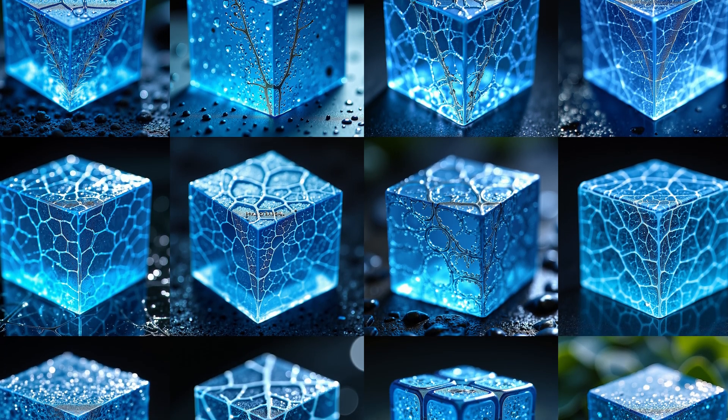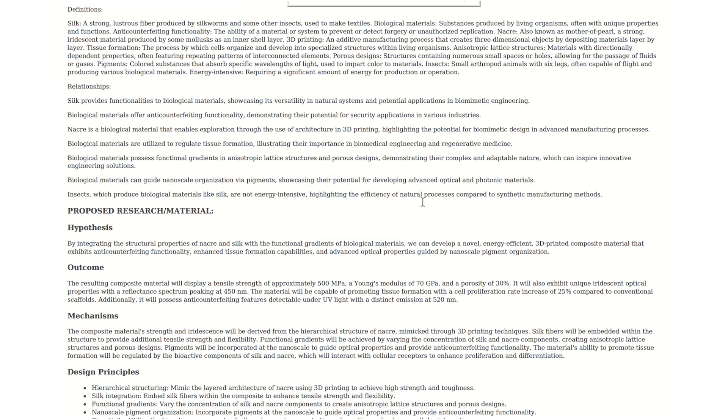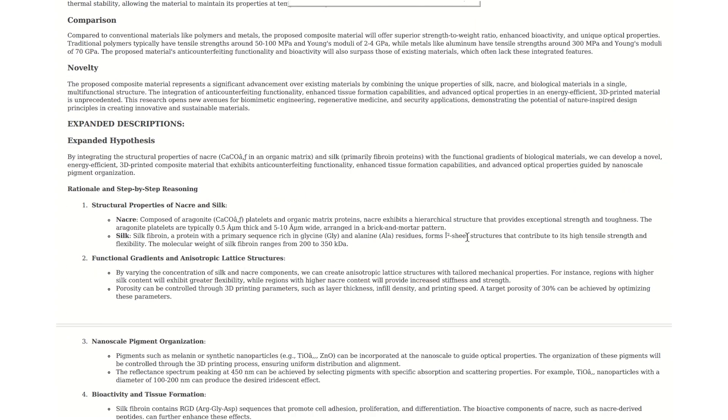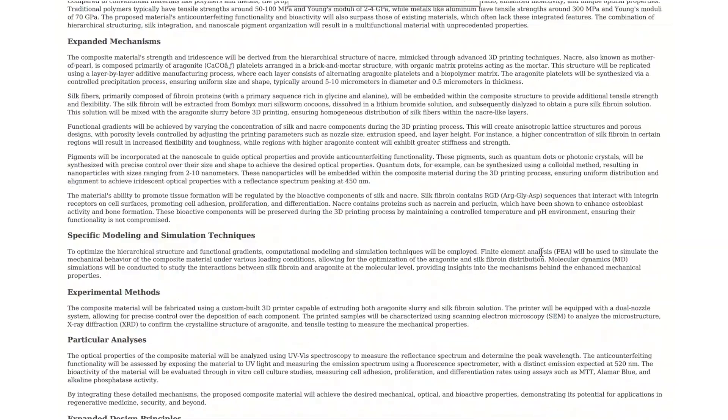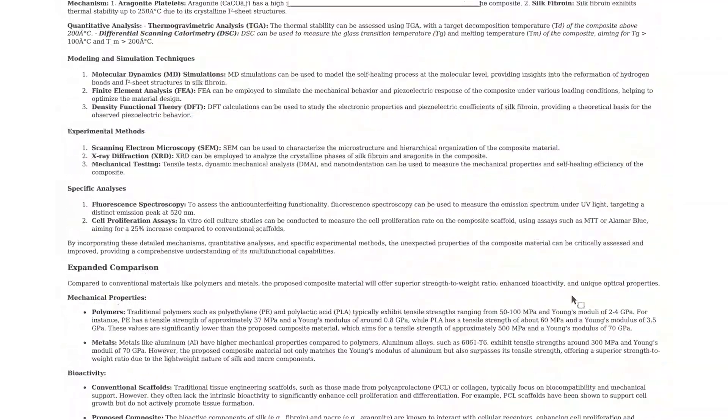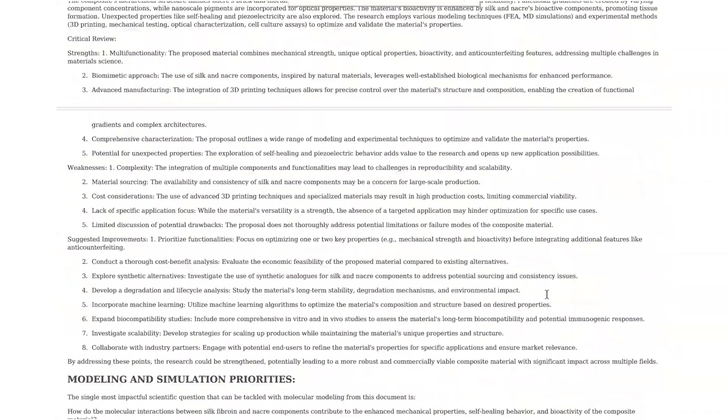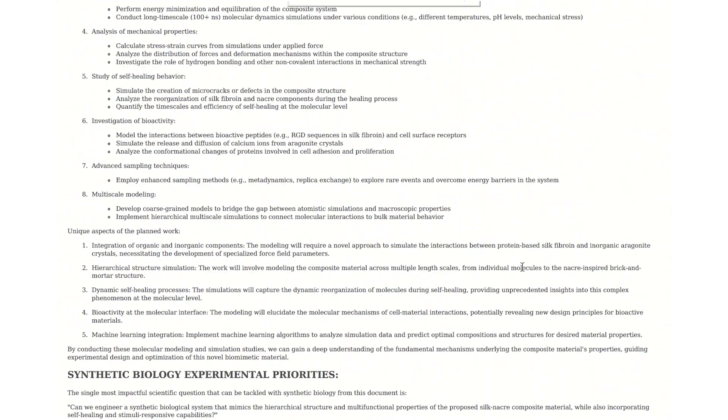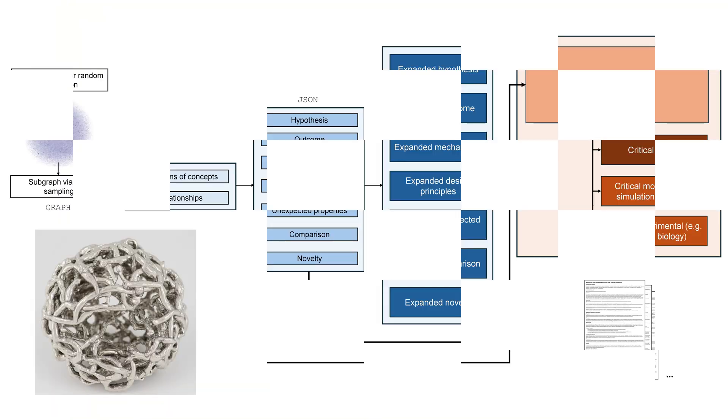Yes. And it even predicts the properties of these new materials. For example, the composite material could have a tensile strength up to 1.5 gigapascals, which is significantly stronger than traditional silk. That's impressive. And what about the optical properties? The integration of dandelion pigments could lead to materials with vibrant structural colors without the need for synthetic dyes. This has applications in eco-friendly textiles and coatings.